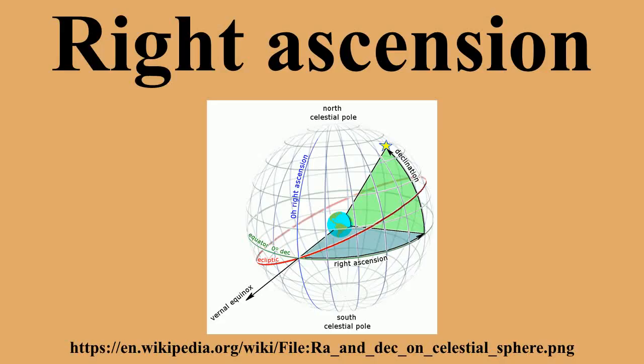An old term, right ascension refers to the ascension, or the point on the celestial equator which rises with any celestial object, as seen from the Earth's equator, where the celestial equator intersects the horizon at a right angle. It is contrasted with oblique ascension, the point on the celestial equator which rises with the celestial object as seen from almost anywhere else on Earth, where the celestial equator intersects the horizon at an oblique angle.